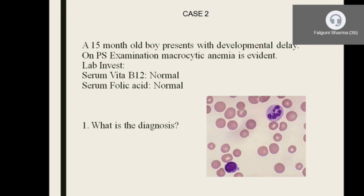Case 2: a 15-month-old boy presenting with developmental delay. On peripheral smear examination, there was a picture of macrocytic anemia — you can see larger RBCs. It typically presents as megaloblastic anemia. The most common cause for macrocytic anemia would be deficiency of vitamin B12 or folic acid, but when serum levels of these are measured, they are normal. The diagnosis is orotic aciduria — a case of megaloblastic anemia secondary to orotic aciduria. The mechanism will be discussed in the clinical significance section.